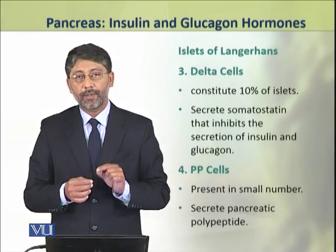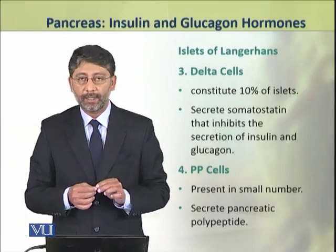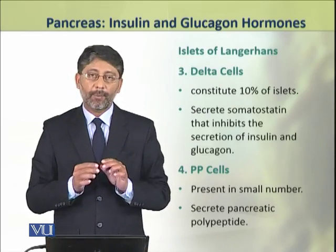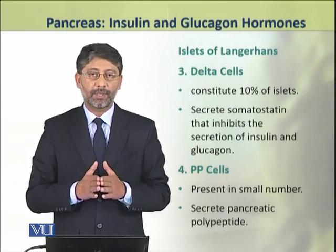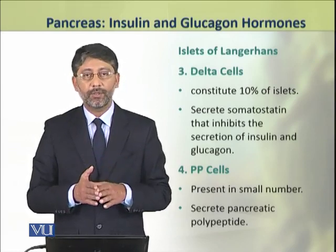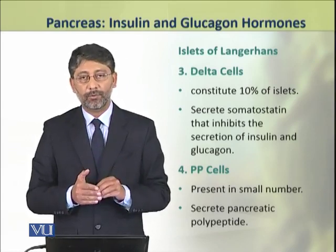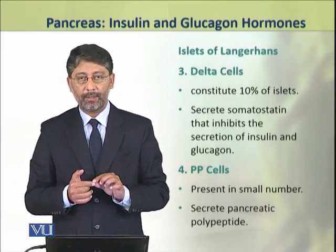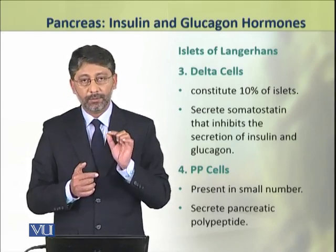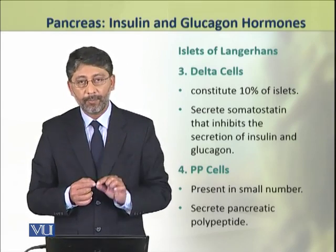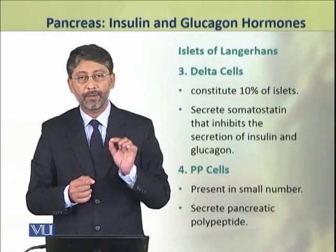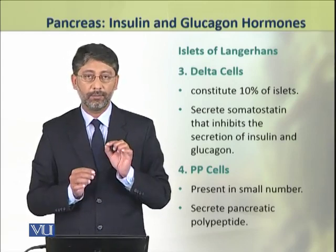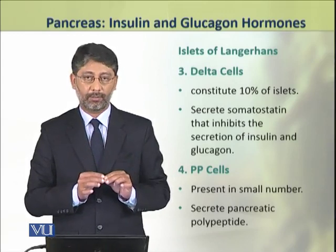The third type of cells are the delta cells, which constitute about 10% of the islets and produce a hormone which is called somatostatin. This hormone inhibits the release of both insulin and glucagon.